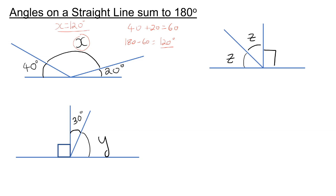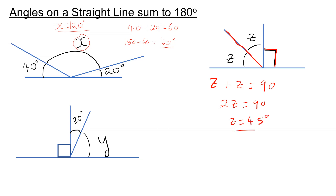In the second question, we have 90 degrees and then two lots of the angle Z. So 180 take away 90 is 90. So Z plus Z equals 90, meaning 2Z is 90. To find Z, I divide by 2, so Z is just 45 degrees.